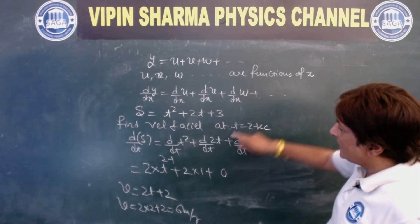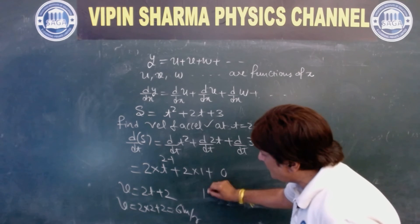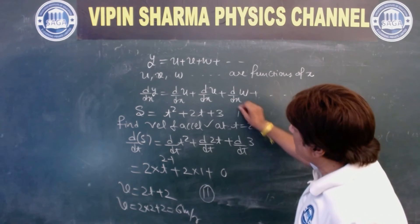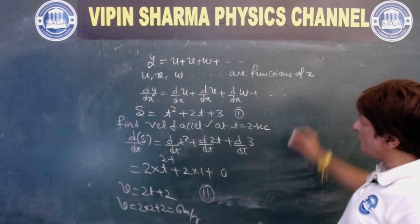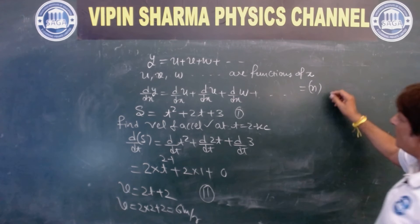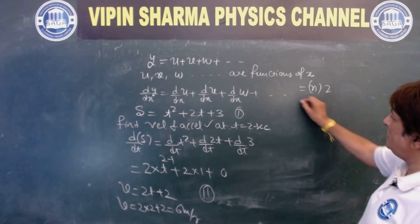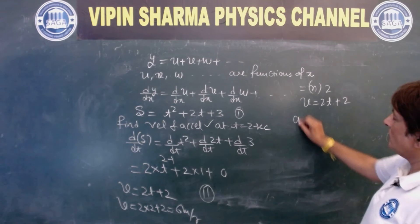Now, we are asked acceleration. Now acceleration is equation 2. What is equation 2? Yes, the symbol is equation 2. From equation 2, v is equal to 2t plus 2. So acceleration is d/dt of v.